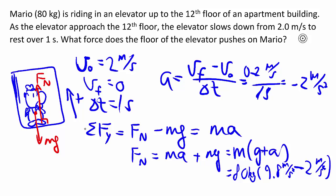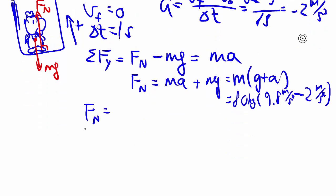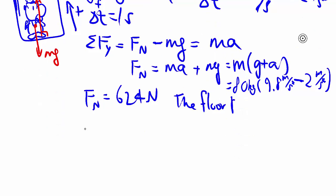G here is the magnitude, so we already account for the fact that it's downwards with this negative sign here. But you get your Fn here that's a little smaller than your Fg, because you're slowing down.